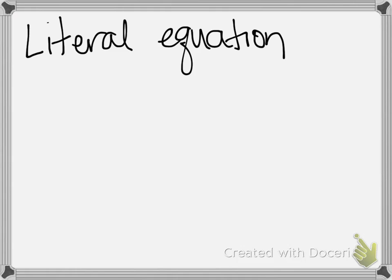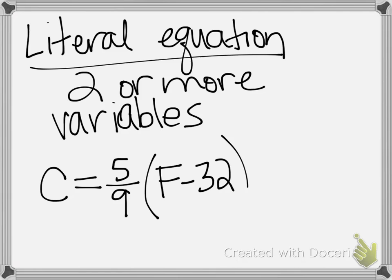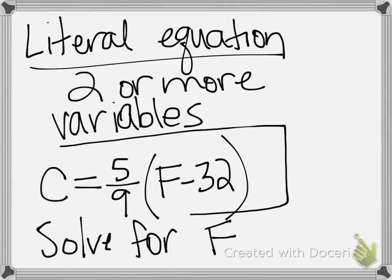That is also a literal equation. A literal equation is an equation that has two or more variables. I can solve for one or the other. I know that C equals 5 ninths F minus 32. I can actually rearrange this and solve for F. I want to see if you can use your algebra to solve for F. Pause the video and see if you can solve for F.